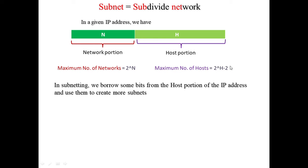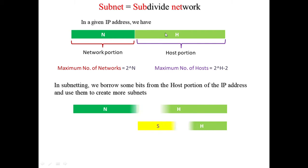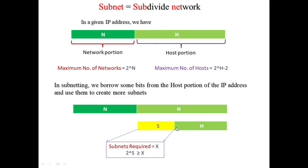In subnetting, to create more networks within a network, we borrow some of the bits from the host portion and use them to identify and create more subnets. For example, the network portion and host portion are defined in the IP address, and subnetting guides us to borrow some bits from the host portion for subnetting, with the remaining bits used for hosts within that subnet. How many bits we take depends on the requirement.